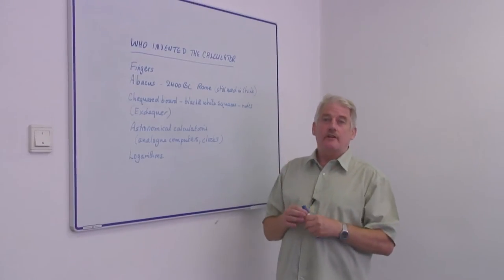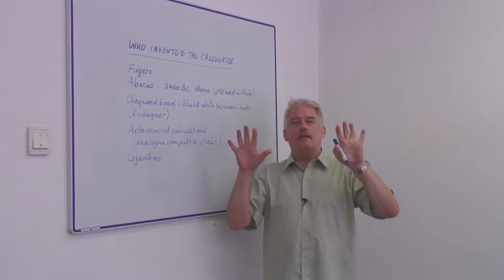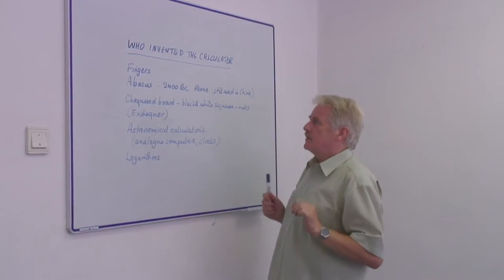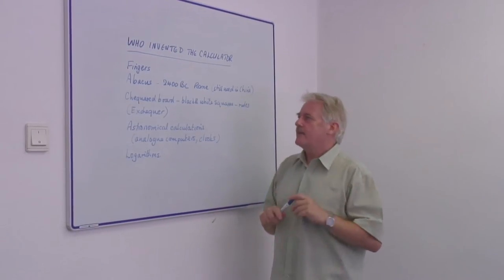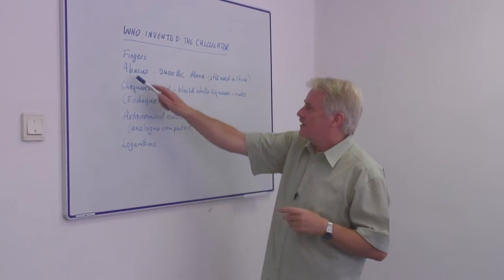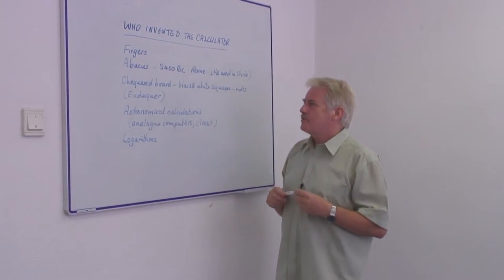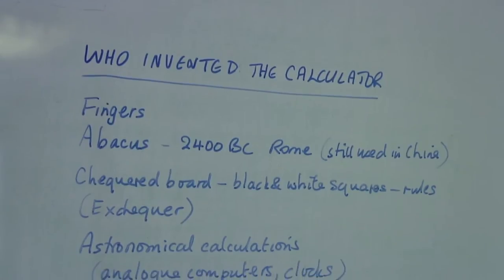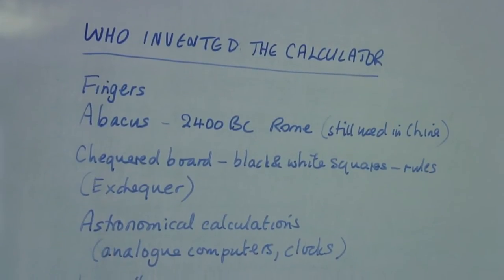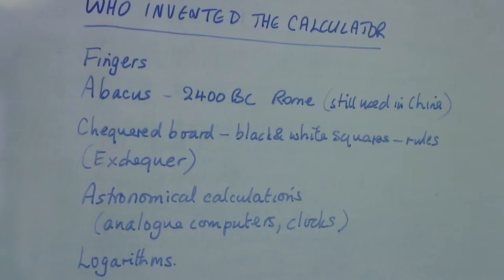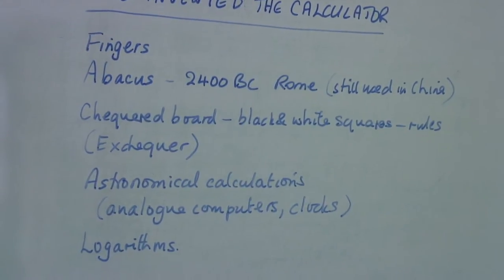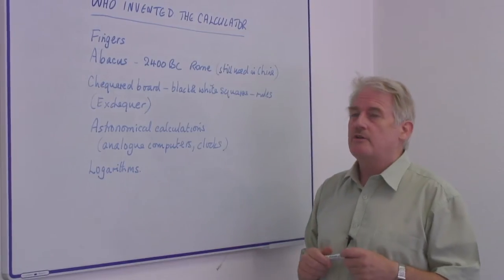Some people might say God invented the calculator because he gave us ten fingers. But apart from that very simple idea, the first practical device, one still in use even today in China, is the abacus. And that was in common use in Rome in 2400 BC.